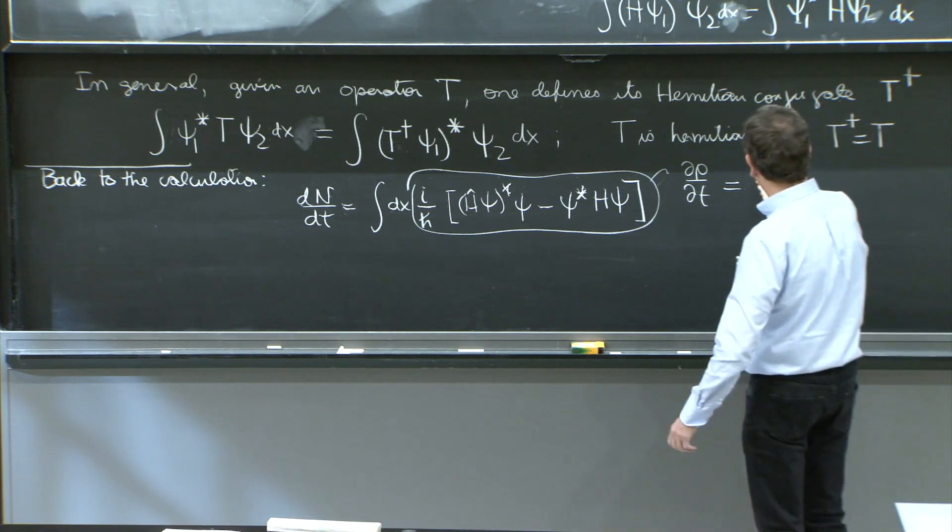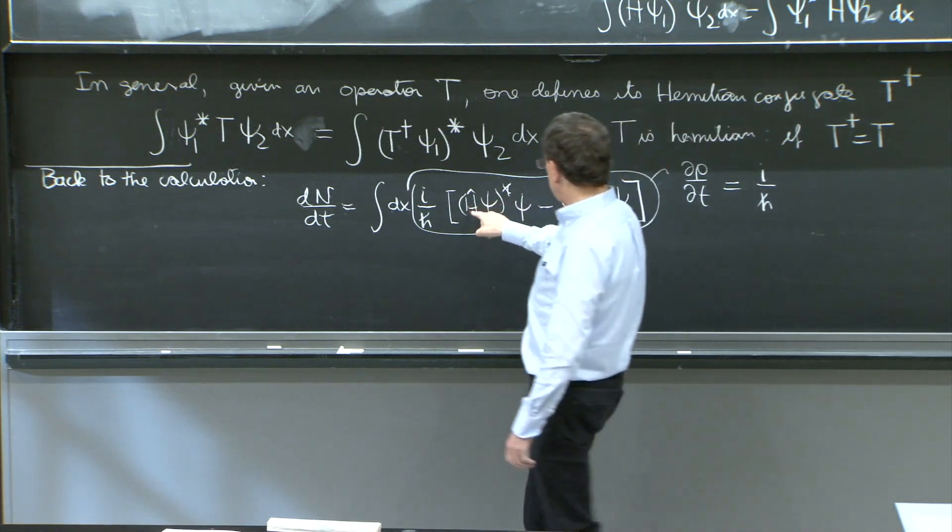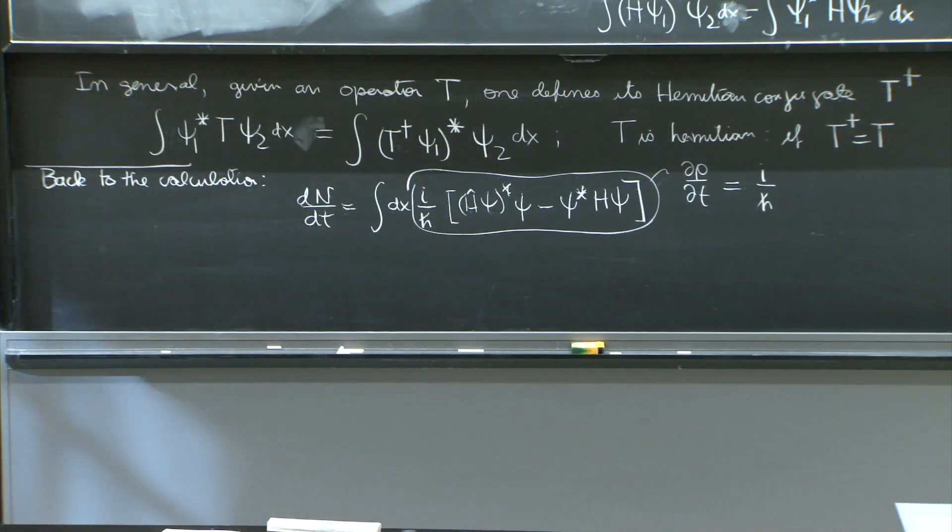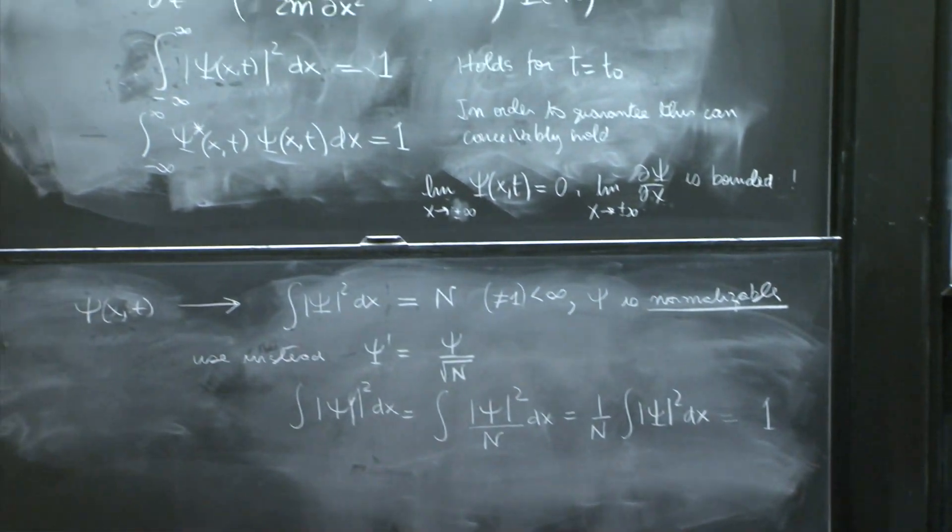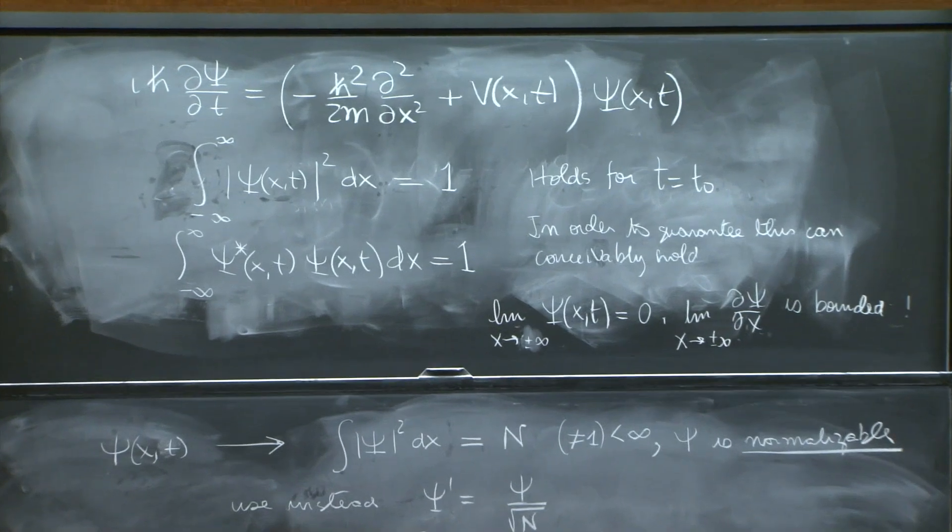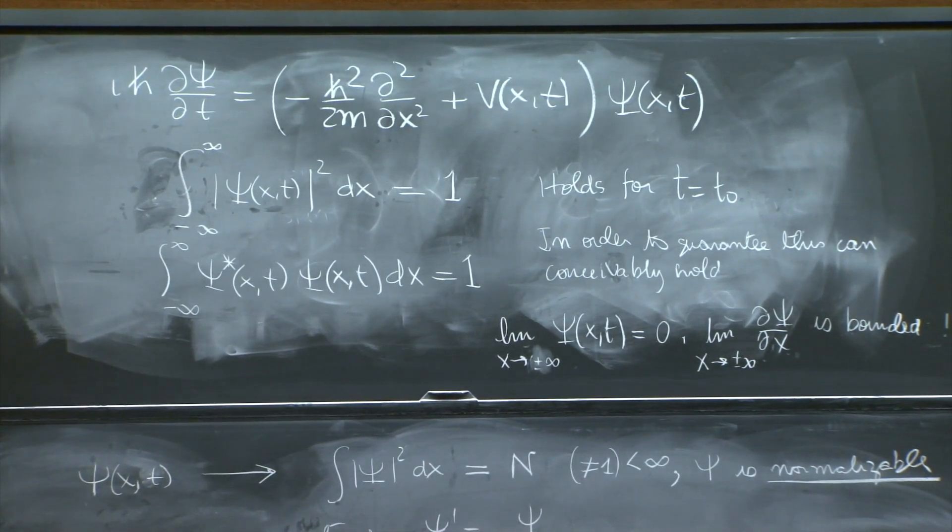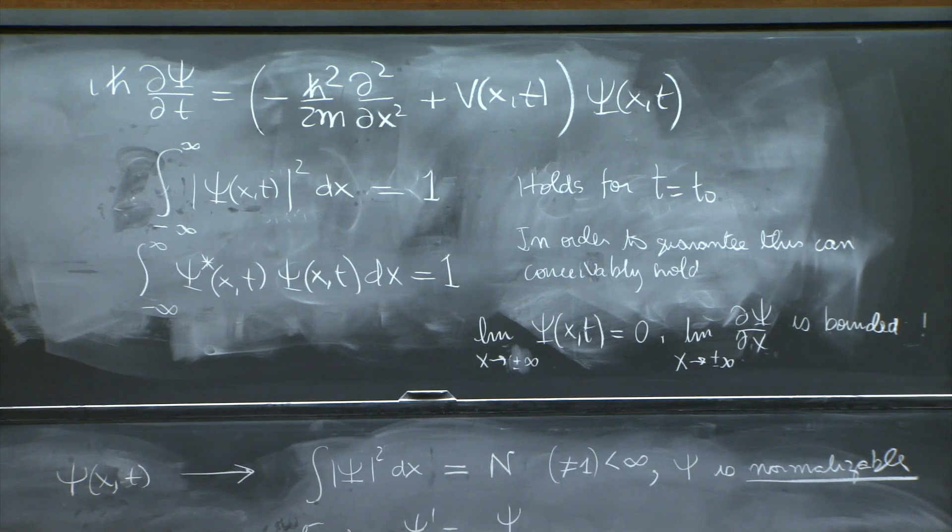Well, you would have the following, i over h bar H psi star. Well, H in detail is over there, so I'll put it here, minus h squared over 2m, the second d/dx squared of psi star.